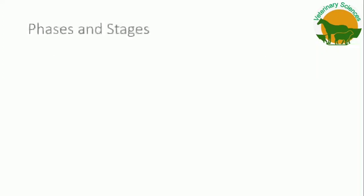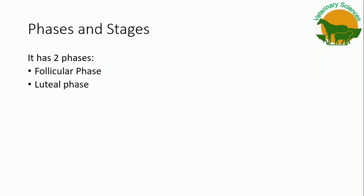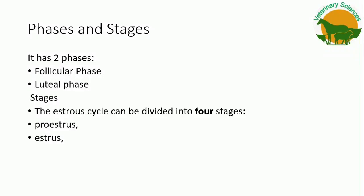The estrus cycle is divided into two phases and four stages. The two phases are the follicular phase and the luteal phase. Each phase has two stages, so there are four stages in total. The follicular phase is divided into proestrus and estrus, while the luteal phase is divided into metestrus and diestrus.